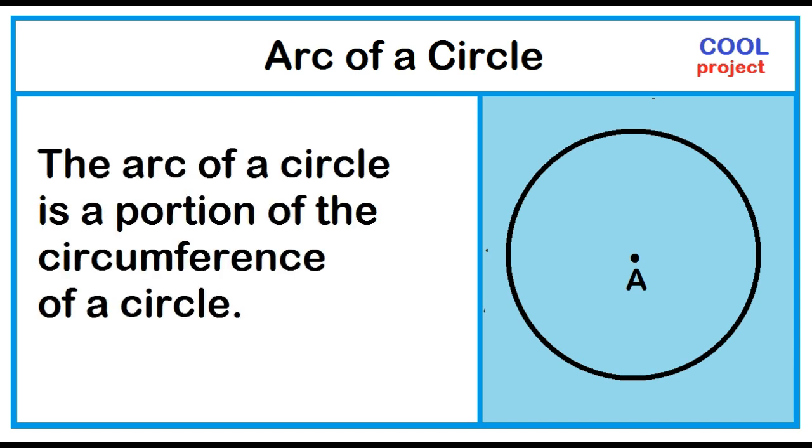The arc of a circle is a portion of the circumference of a circle. Point B and point C are points on the circle.